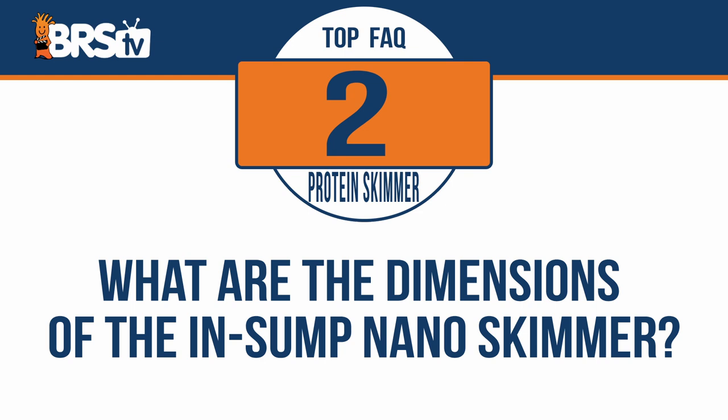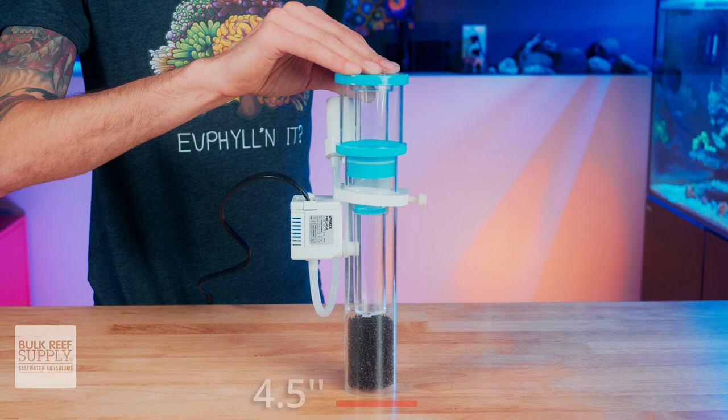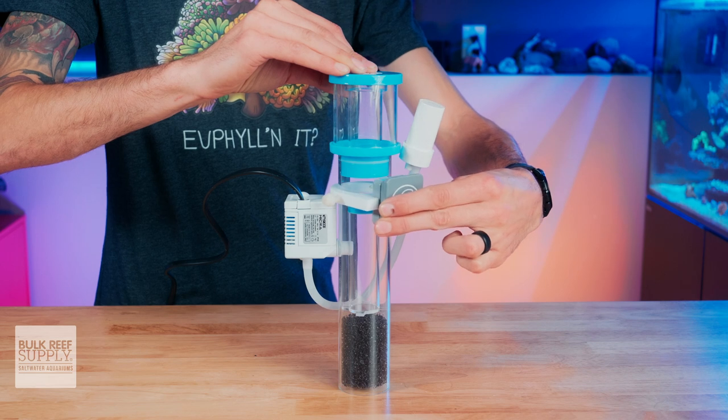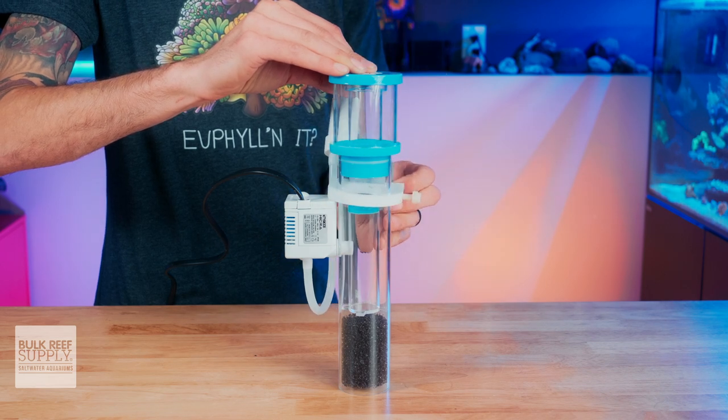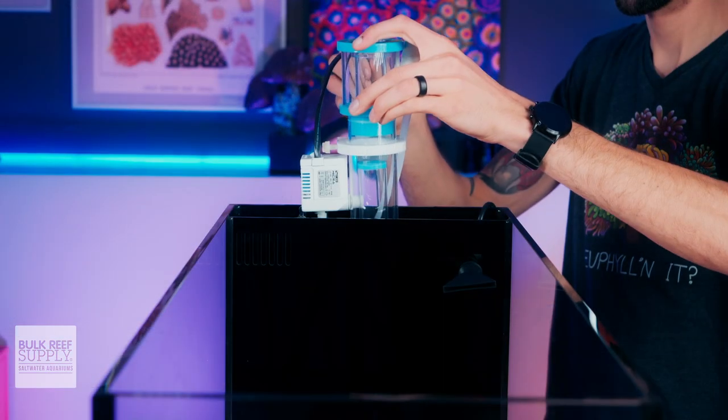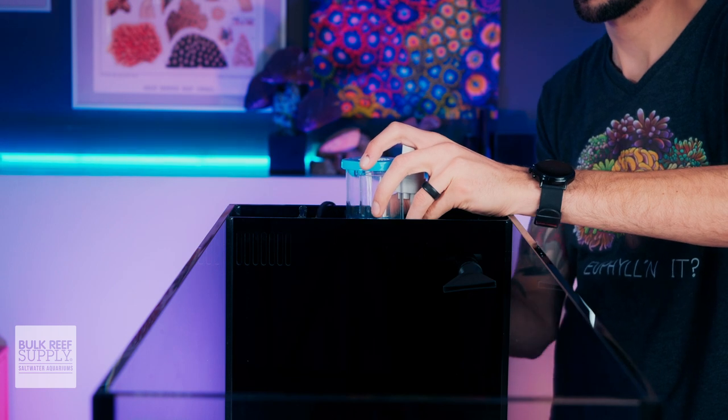What are the dimensions of eShop's Nano Skimmer? It is pretty compact at only four and a half inches by two and a half inches by 11 and a half inches tall, and the magnetic mount allows the skimmer to move inside of it, so you can position the magnetic mounting point wherever you need to on the skimmer body in order to comfortably mount it in your sump, all-in-one filter chamber, or directly in your tank.